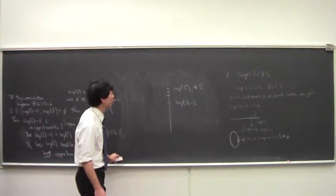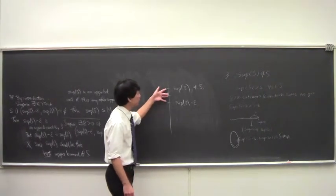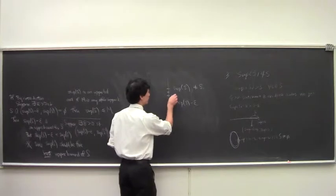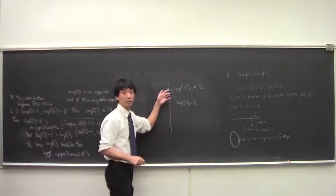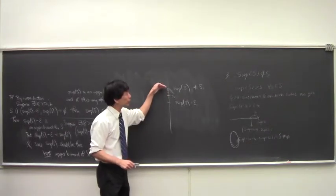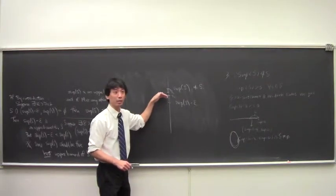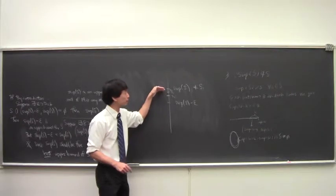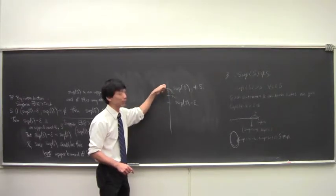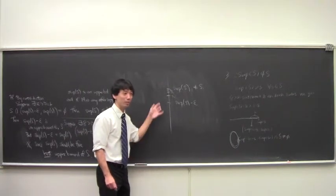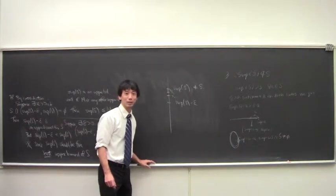So there must be infinitely many elements. What this shows is that if the supremum is not in S, then in fact there must be a sequence S1, S2, S3, S4, and so on. There must be a sequence that approaches the supremum from below and gets arbitrarily close to it. In other words, it's a sequence whose limit is the supremum. We haven't talked about what a limit is, but we'll talk about it in the next class.